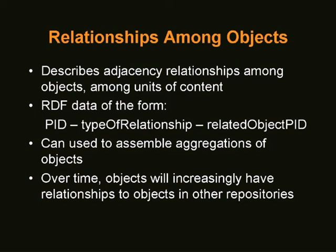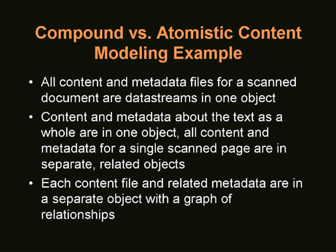Over time, it's going to get really complex. Watching what scholars do with digital information, they want to discover things in all kinds of repositories, make new connections, create new digital stuff that's given back to one of those repositories — and those relationships are going to be scattered across many repositories. So we've started down the road of a way to make sense of that process. If you've been around the Fedora list, you've heard people talking about compound versus atomistic content modeling, which is all about how you define your objects.